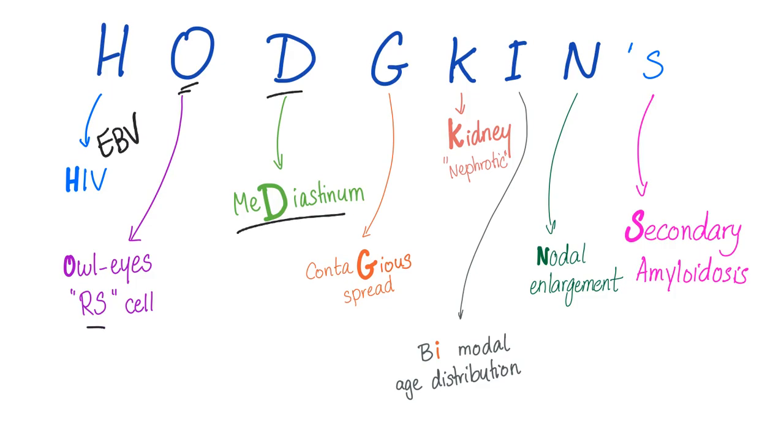D for mediastinum or mediastinal lymphadenopathy. G for contagious spread. K for kidney, especially a nephrotic syndrome, such as minimal change disease.